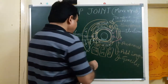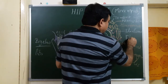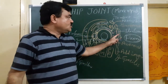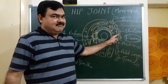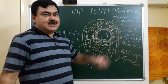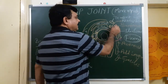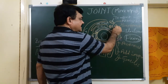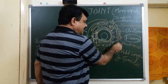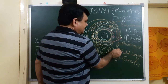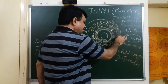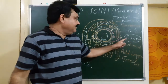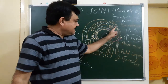In the case of flexion, the iliopsoas muscle is the main flexor at the hip joint. The flexors include rectus femoris, sartorius, iliopsoas, and adductor longus. The powerful flexor is iliopsoas, and the others are accessory flexors.